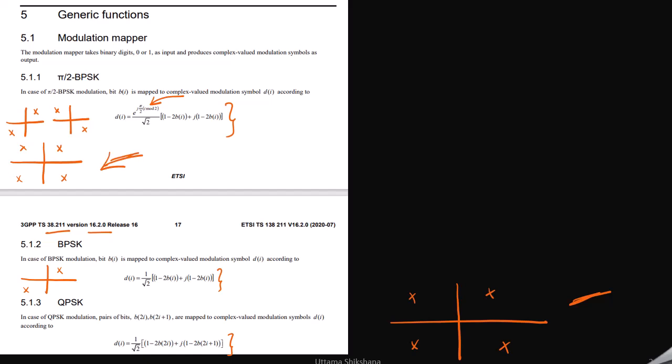Even though the constellation looks like this, it still takes one bit as an input. π/2 BPSK also takes one bit as an input, whereas QPSK takes two bits as an input. Those things are all mentioned here.